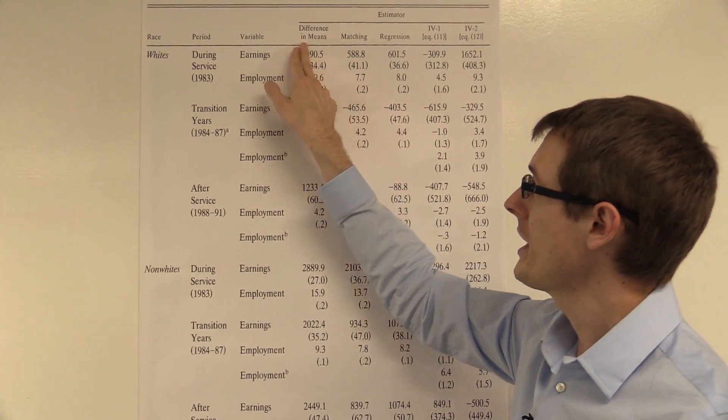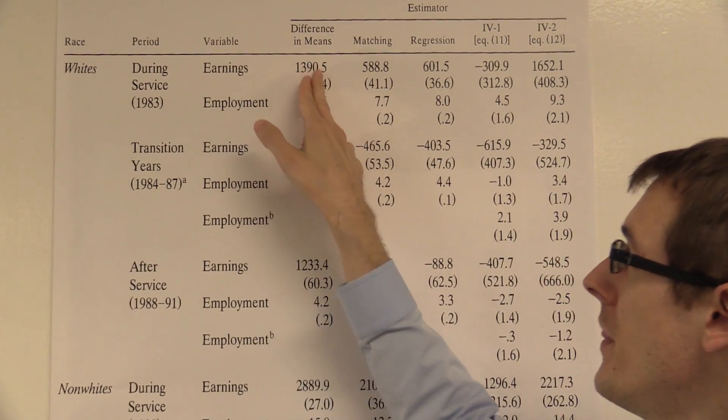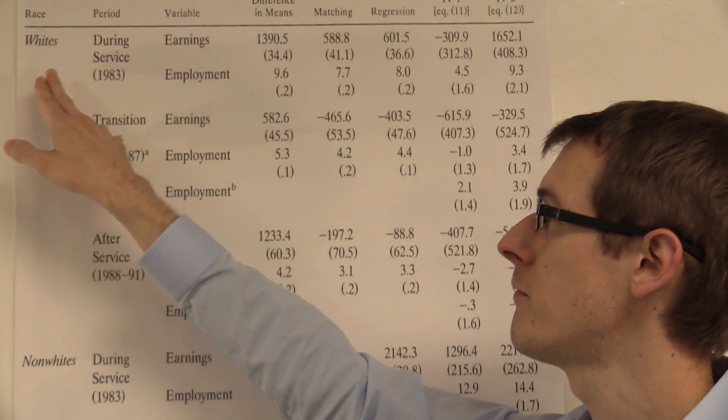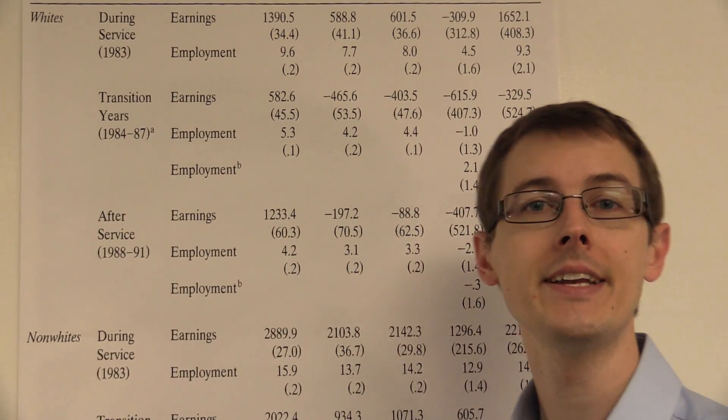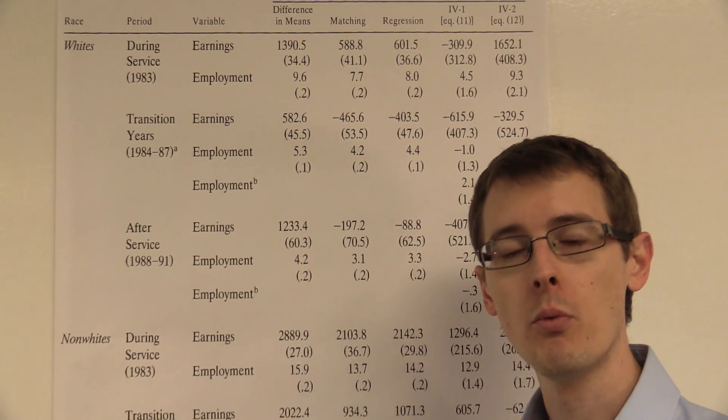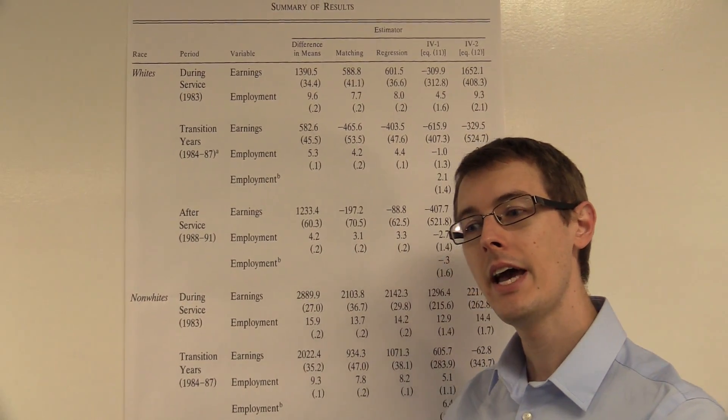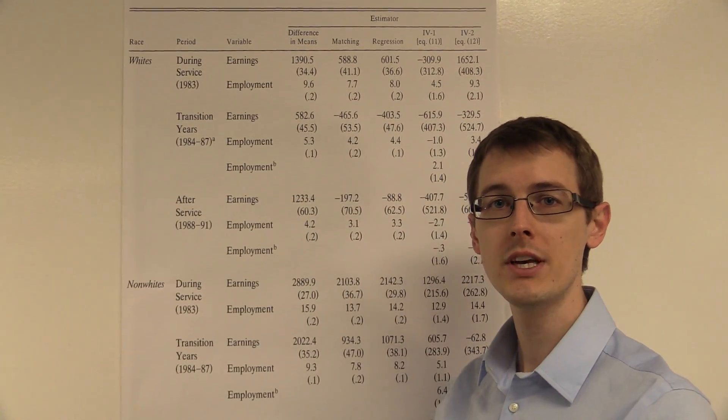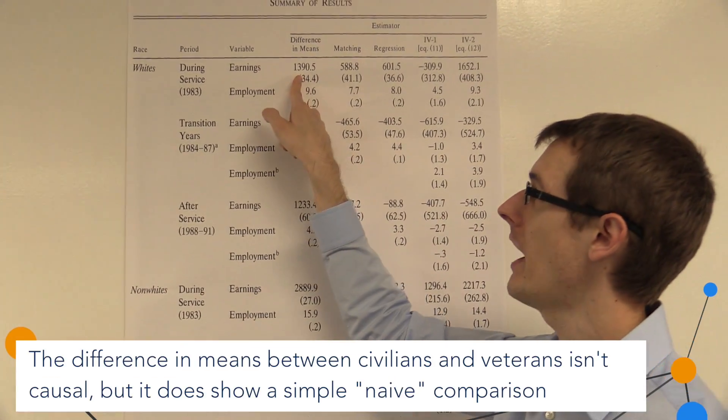So in the first column, he labels the difference in means. This is what we saw in the previous graph. This is just you take your two groups of people, for whites who applied in 1982. You've got two groups: the ones who enlisted in the military and the ones who didn't. And then you look at the earnings of those two groups, take the difference, and that's what you've got here.